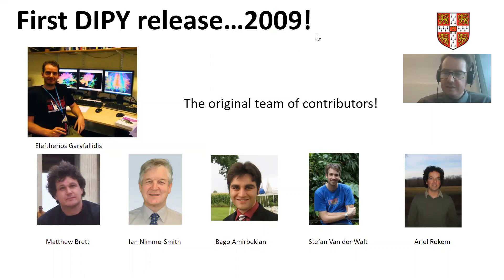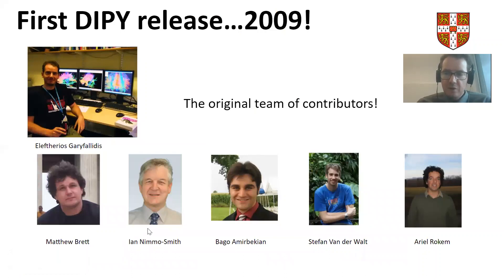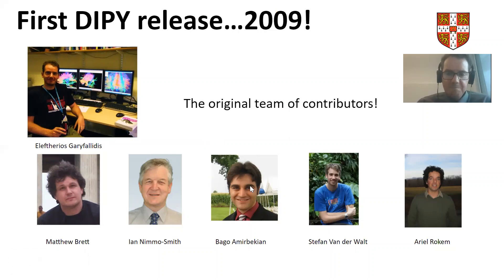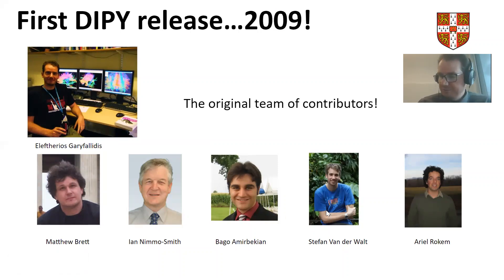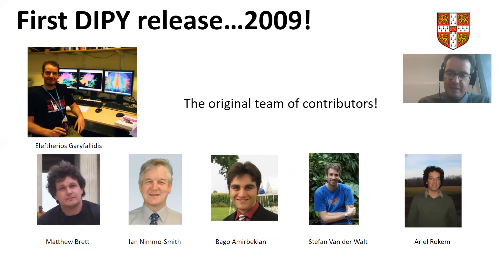This is the first release from 2009, when I was a PhD student at the University of Cambridge. My advisors Matthew Baird and Ian Nemo-Smith helped me start the project. The first contributors were Bago, Amir Bergian, Stefan van der Waal, and Ariel Roeken — the first believers in the project. Bago was at UCSF, Stefan was in Stellenbosch in South Africa, and Ariel Roeken was in Berkeley. Immediately the project had a diverse nature and we tried to bring as many labs in as possible.